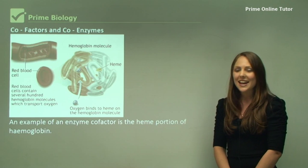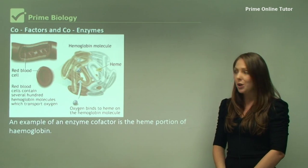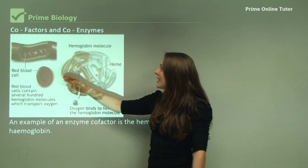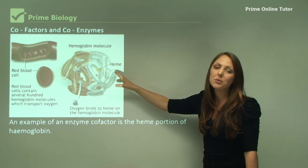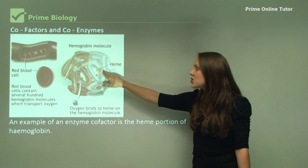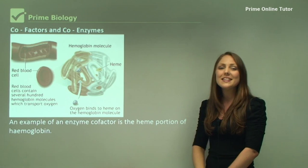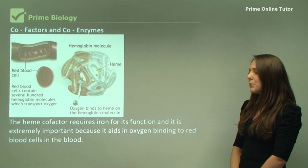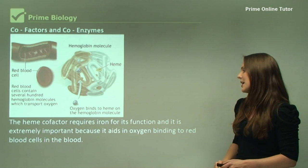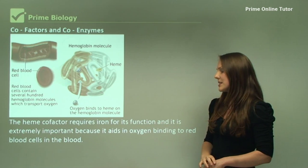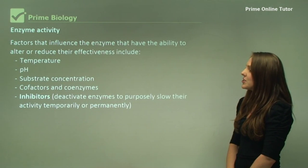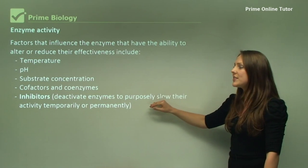An example of an enzyme cofactor is the heme portion of hemoglobin. Here we have a blood vessel; within this blood vessel are thousands of red blood cells, and inside these red blood cells is the hemoglobin molecule. This is a protein, and the heme part of the molecule — this yellow section — is a cofactor important for its functioning. The heme cofactor requires iron for its function and is extremely important because it aids in oxygen binding to the red blood cells. Without the iron it wouldn't be able to bind with oxygen.